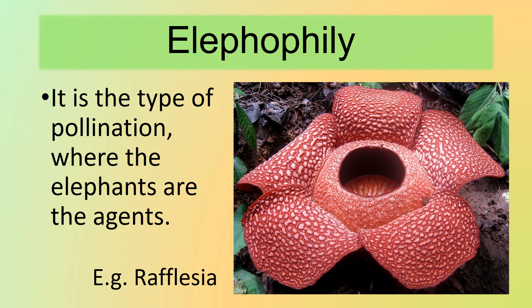There is also a type of pollination where elephants are the agents. An example of a flower pollinated by elephants is Rafflesia. Note that Rafflesia is not only pollinated by elephants — it's also pollinated by other insects.